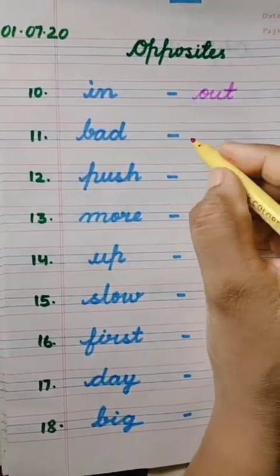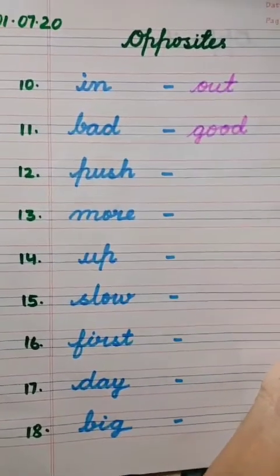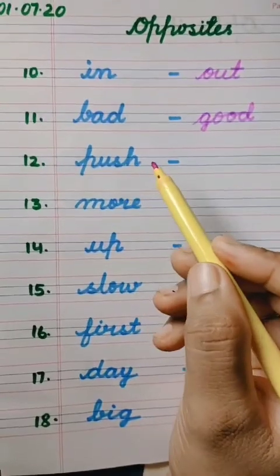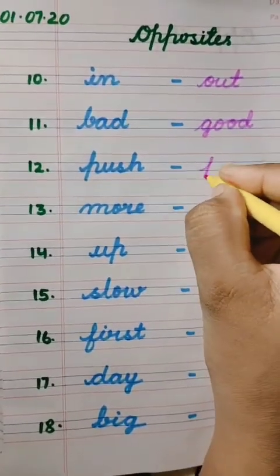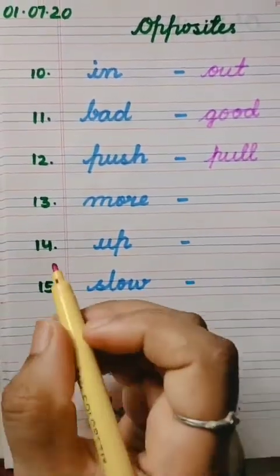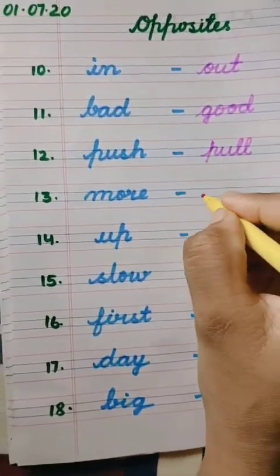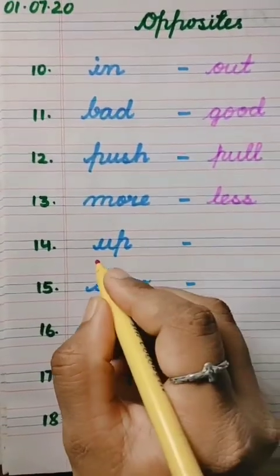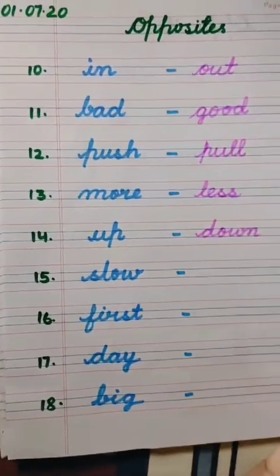Number eleven: bad — B-A-D — opposite of bad is good — G-double-O-D, good. Number twelve: push — P-U-S-H — and opposite of push is pull — P-U-double-L, pull. Number thirteen: more — M-O-R-E — and opposite of more is less — L-E-double-S, less.